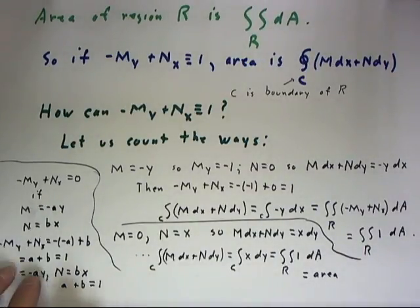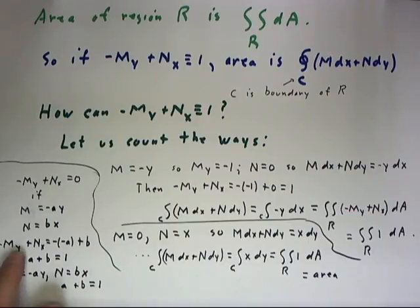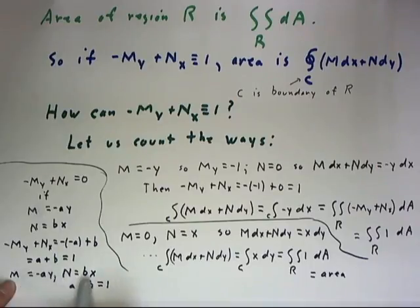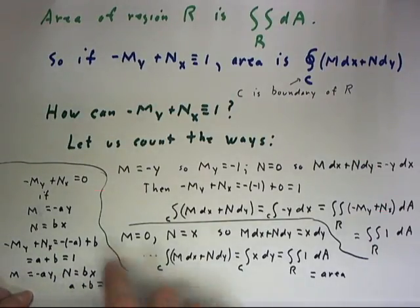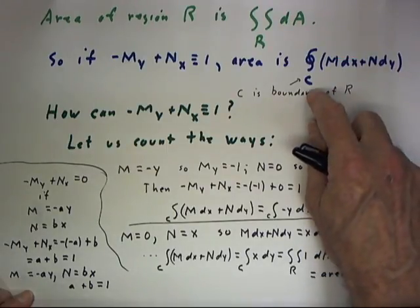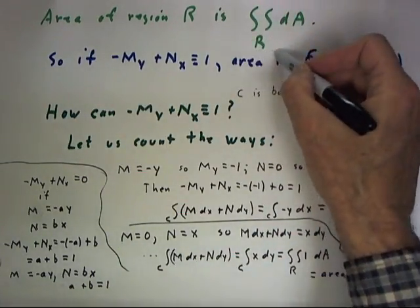I take it back, that was right. So here's the condition: M equals -AY, N equals BX, A + B equals 1. If you add -M_y to N_x, you do get 1. And then the line integral that you get from Mdx + Ndy over whatever your curve is will give you the area inside the curve.